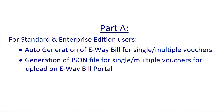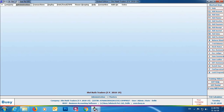For standard and enterprise edition users, there are two ways: either you can generate e-way bill automatically or you can generate the JSON file. We'll discuss the creation of the JSON file, uploading the JSON file on the e-way bill portal, and then updating the e-way bill number we receive back into the vouchers.